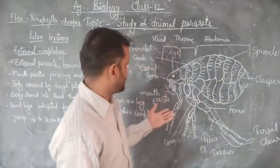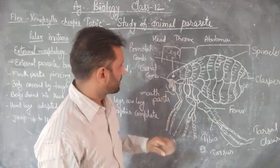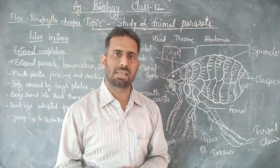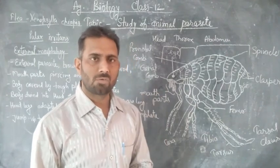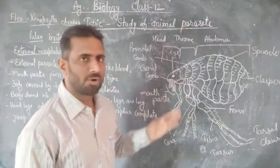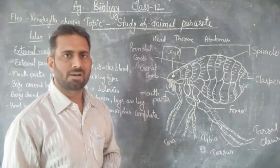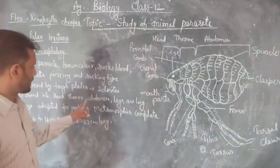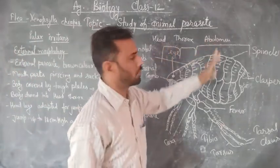We can see the structure of fleas — it is an ectoparasite of mammals and birds. It has a brown colour and its body is divided into three parts: head, thorax, and abdomen.